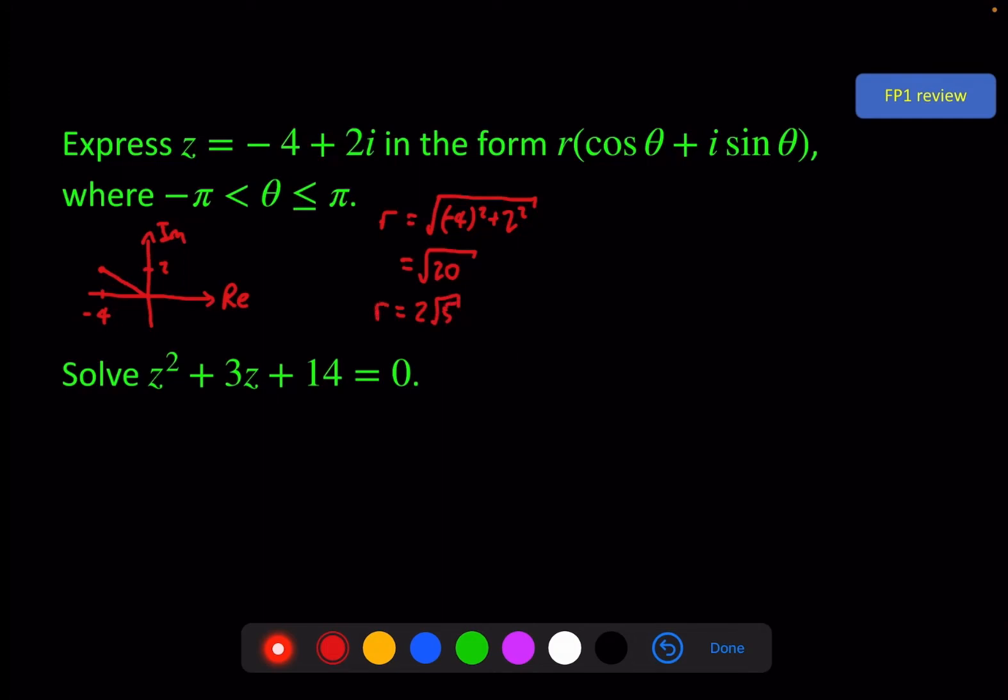Then we need theta. To find theta, first I'm going to find this one, which I'll call alpha, and then I'll use that to find theta here, measured from the real axis, positive, because it's going counterclockwise.